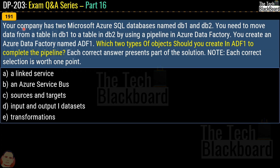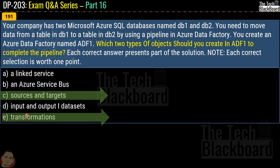Question number 191. Your company has two Azure SQL databases named DB1 and DB2. You need to move data from a table in DB1 to a table in DB2 using a pipeline in Azure Data Factory. You create an ADF named ADF1. Which two types of objects should you create in ADF1 to complete the pipeline? Options are: linked service, Azure Service Bus, sources and targets, input and output datasets, or transformation. The correct answer is option C — sources and targets — and option E — transformations.